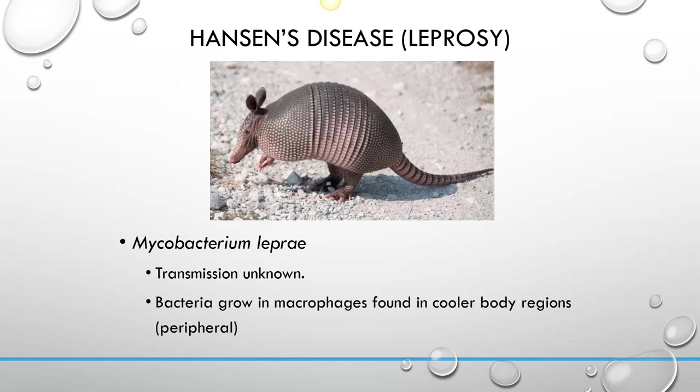When it infects those areas it causes disfigurement, and people used to believe those affected were demons because the disfigurement made them look different. They would throw these people into horrible conditions and shun them from communities. Really, that did no good. Leprosy is not known to be transmitted directly from person to person, so isolating them from the public wasn't even helping others avoid it. We still don't know how this is transmitted, but we do know that about 95% of the world's population is innately immune.